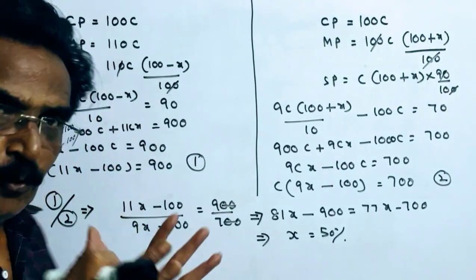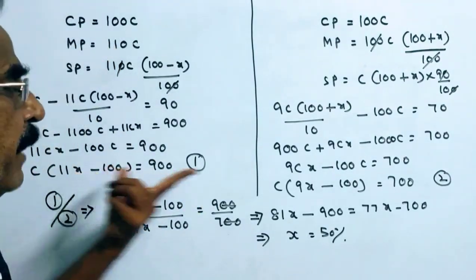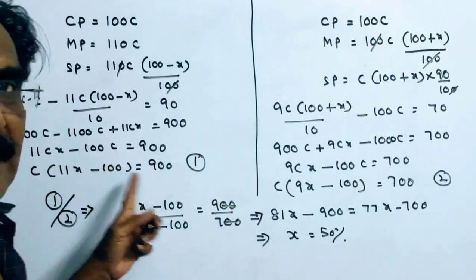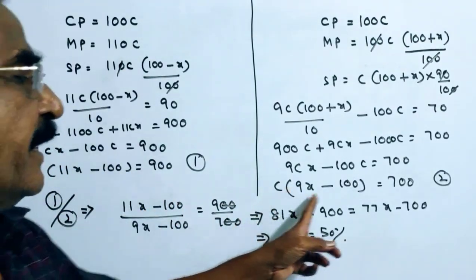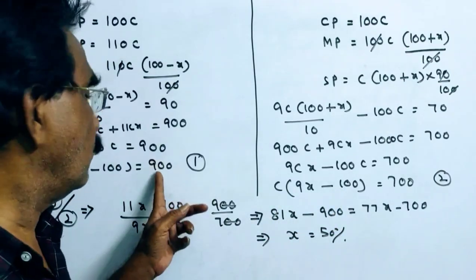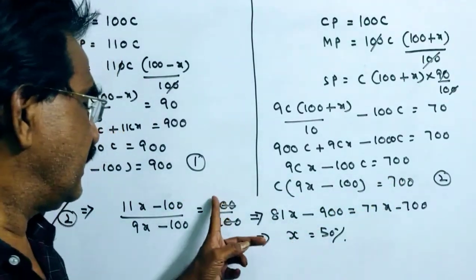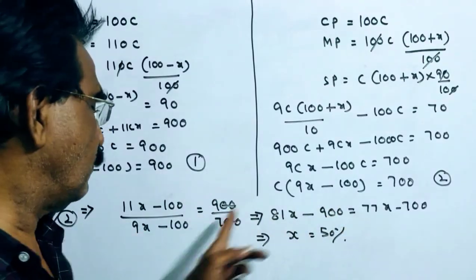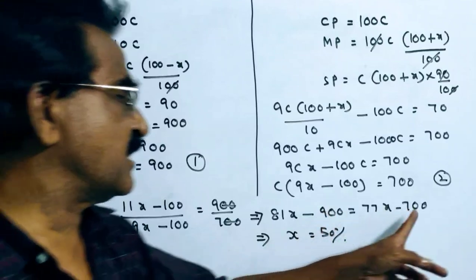Now let us do 1 by 2, this by this. C gets cancelled. 11x minus 100 by 9x minus 100 is equal to 900 by 700, that is 9 by 7. 9 nines 81x minus 900 is equal to 77x minus 700.